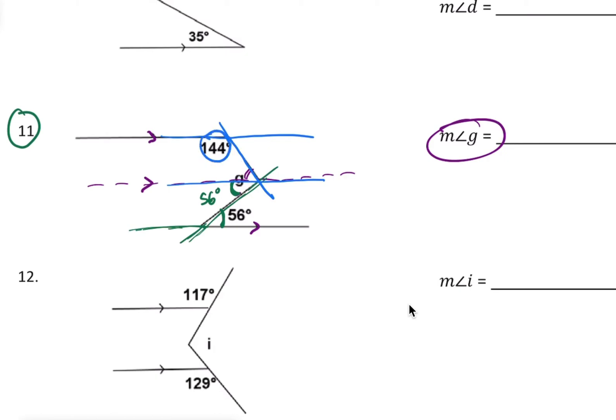Now these angles are on the same side of the transversal so that means they are same side angles and because they're inside the parallel lines then they're same side interior angles. Same side interior angles add up to 180 degrees. So you just need to take the 180 degrees subtract 144 degrees and then you get your answer. So it would be 36 degrees so this angle right here is 36.